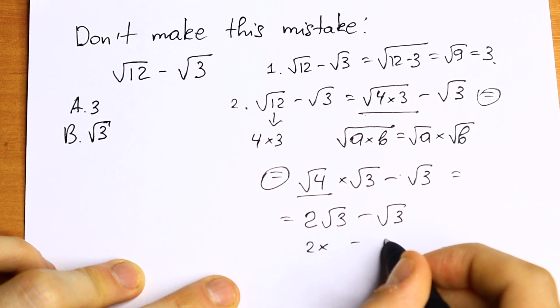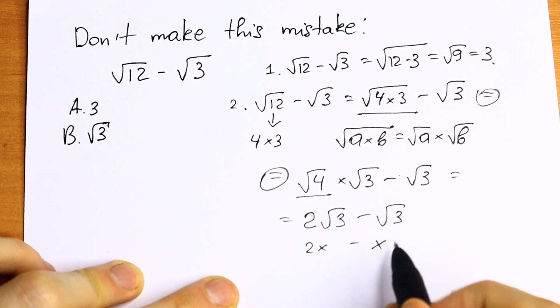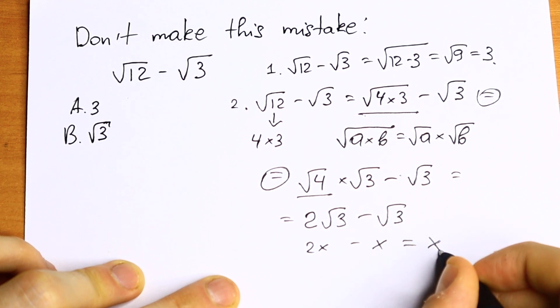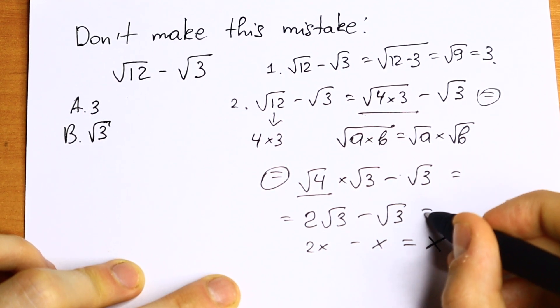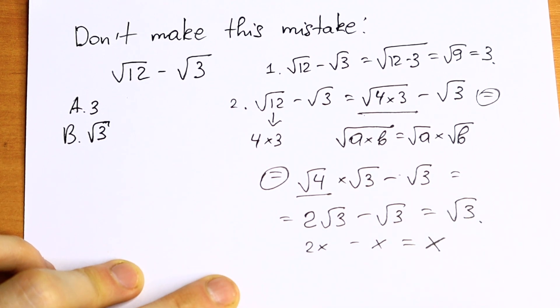It looks like 2x minus x, but instead of x we have square root of 3. Right here we have option, our answer is x, and right here we have square root of 3 if we subtract this.